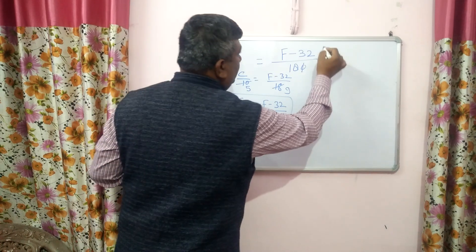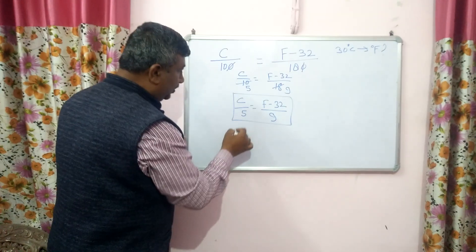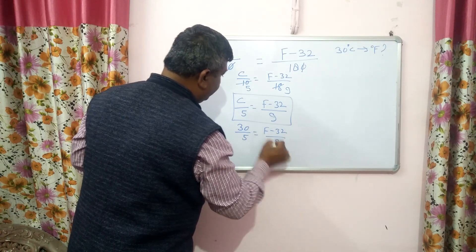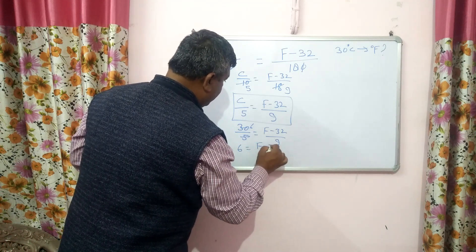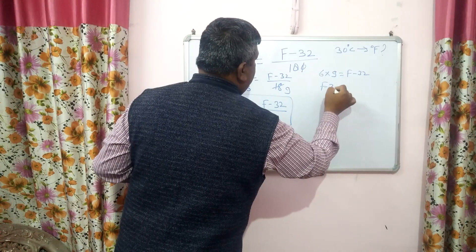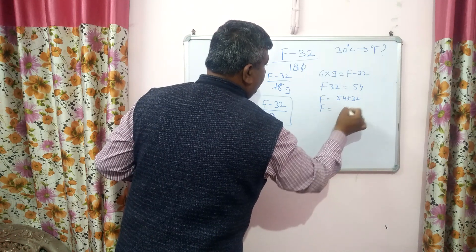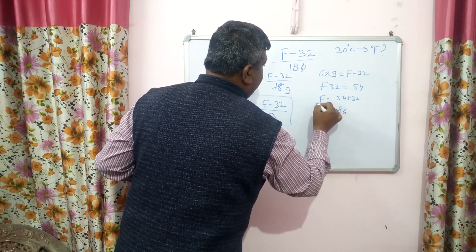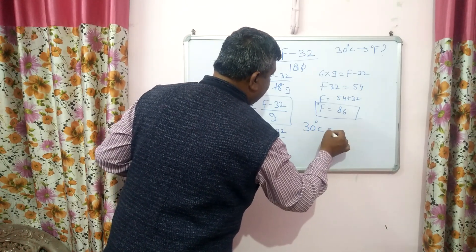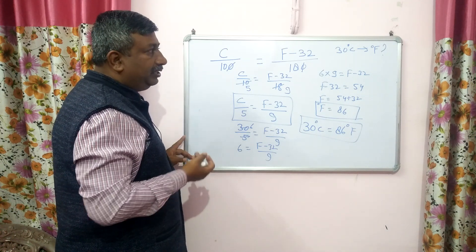For example, if temperature is 30 degree centigrade, what is the temperature in degree Fahrenheit? Write C = 30: 30/5 = (F − 32)/9. So 6 = (F − 32)/9. Cross-multiplying: 6 × 9 = F − 32, so F − 32 = 54, and F = 54 + 32 = 86. Therefore 30 degree centigrade is equal to 86 degree Fahrenheit.